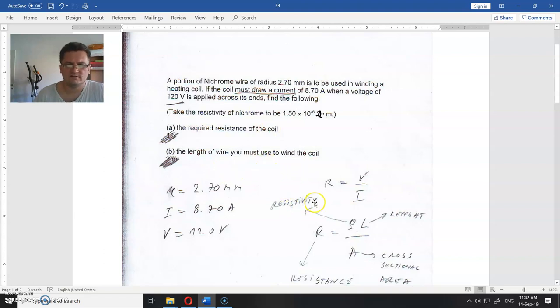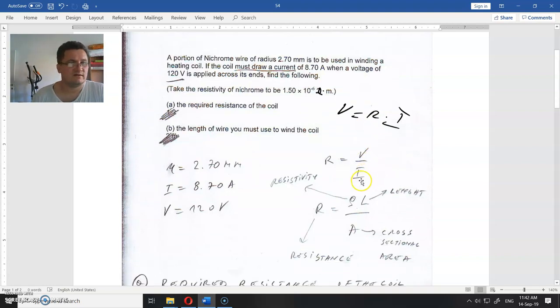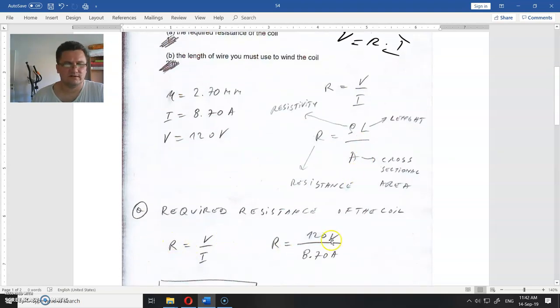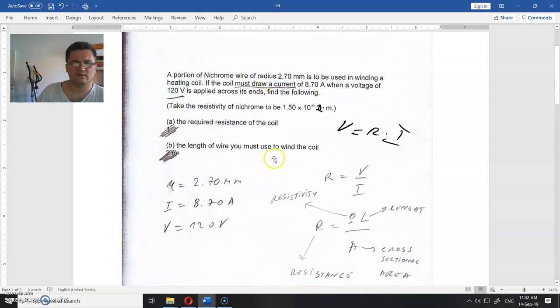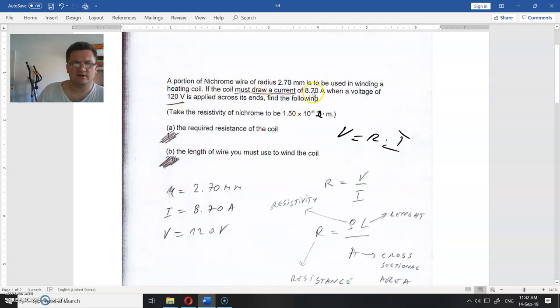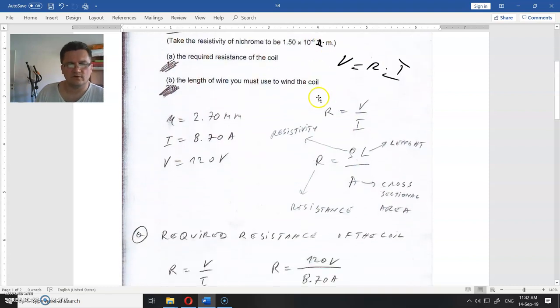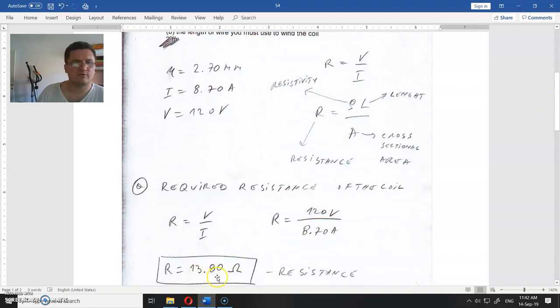First of all, resistance. We can use Ohm's law here. Voltage equals resistance times current. From there, resistance is voltage divided by current. So this is 120V divided by 8.7A. The resistance required is 13.8 ohms.